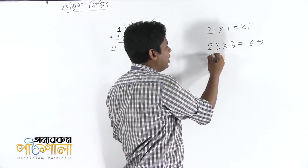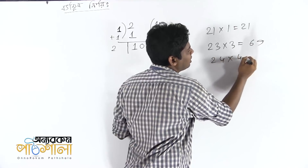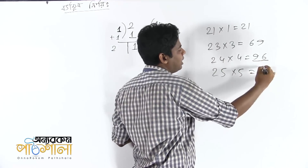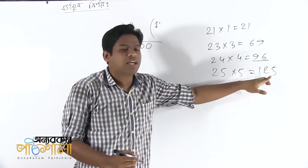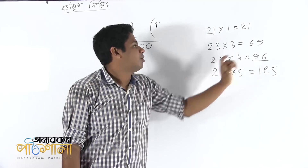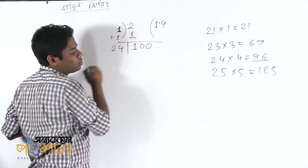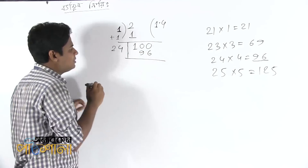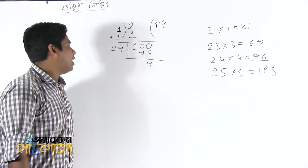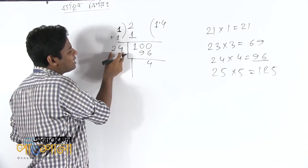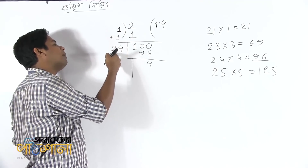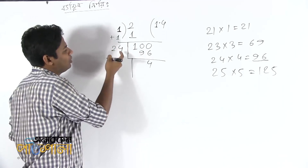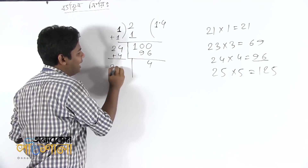23 into 3 is 69, which gives 169. Now you should know that this one is 24 times 4, which is 96. Now you should know this one is 25 times 5. You will get a set because 24 times 4 is 96. So 24 plus 4 is 28, actually 28.